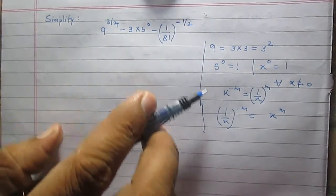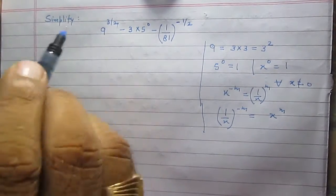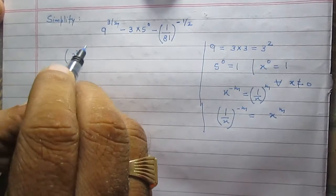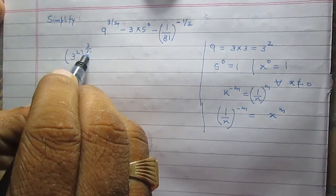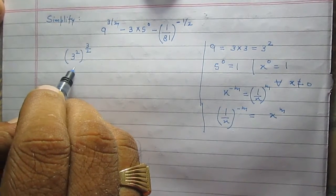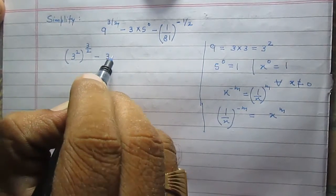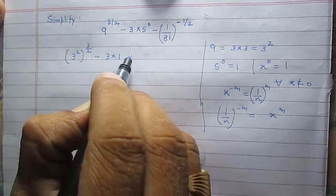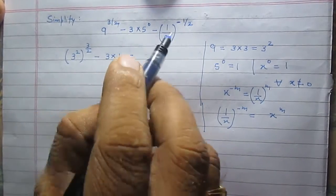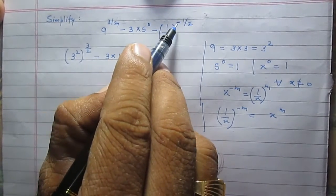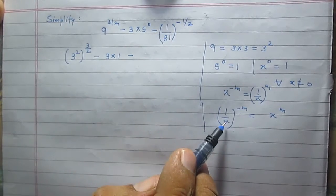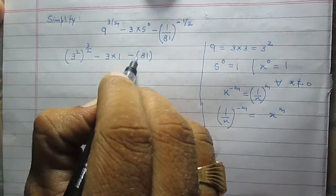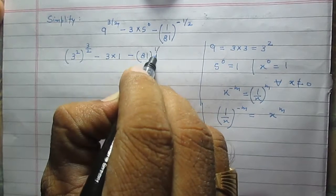Using these rules, we can write 9 as 3 raised to the power 2, then the whole raised to the power 3 by 2, minus 3, with 5 raised to the power 0 equal to 1, and minus 1 upon 21 raised to the power minus 1 by 2. Using this rule, we can write it as 81 raised to the power 1 by 2.